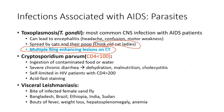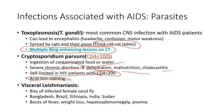Cryptosporidium parvum causes persistent diarrhea when CD4 is below 100, from contaminated food, water, or swimming pools. It is the most common cause of chronic diarrhea in children, causing dehydration, malnutrition, and cholecystitis in HIV patients. It can be self-limiting when CD4 is above 200 but problematic below. Acid-fast staining reveals small pink circular organisms. Leishmaniasis is often associated with the visceral type in AIDS patients, spread by sand flies, found in Bangladesh, Brazil, Ethiopia, India, and Sudan. Symptoms include hepatosplenomegaly and anemia.